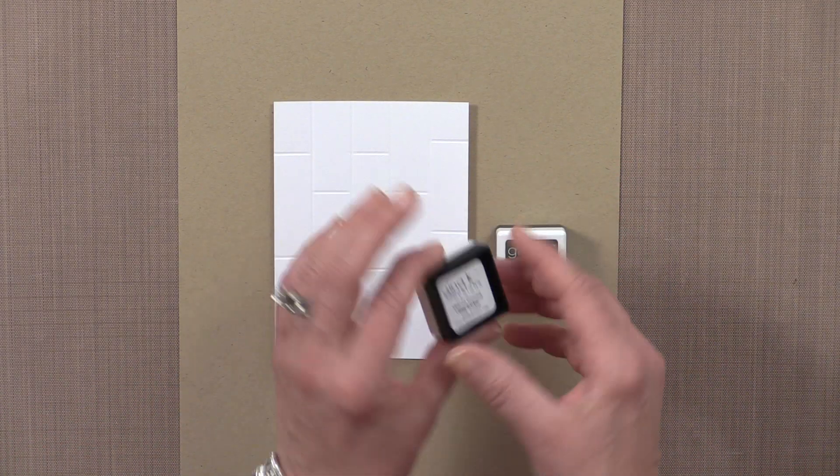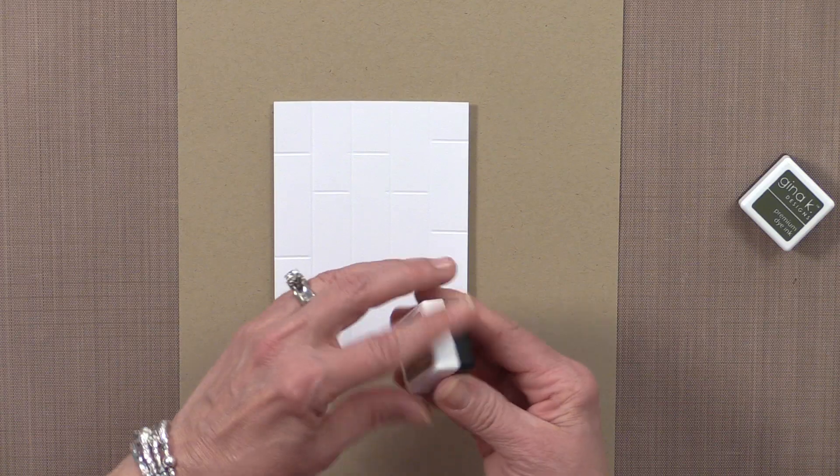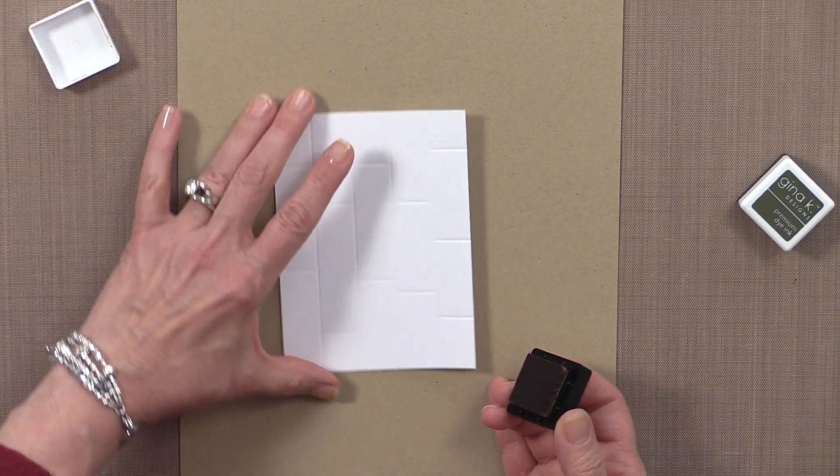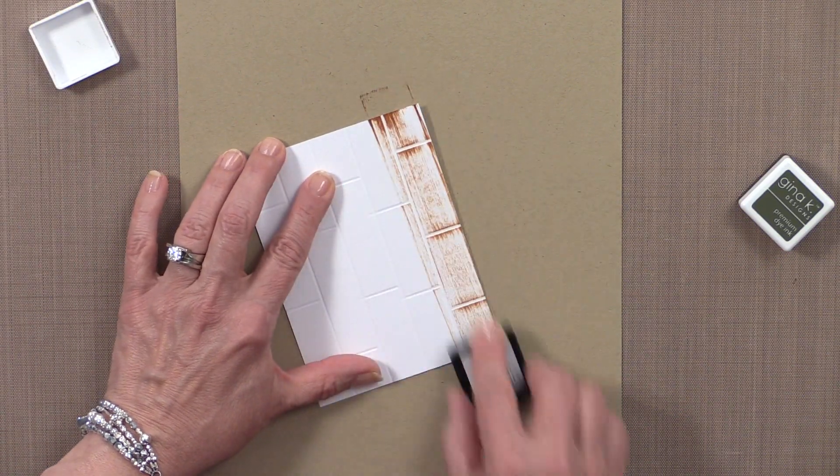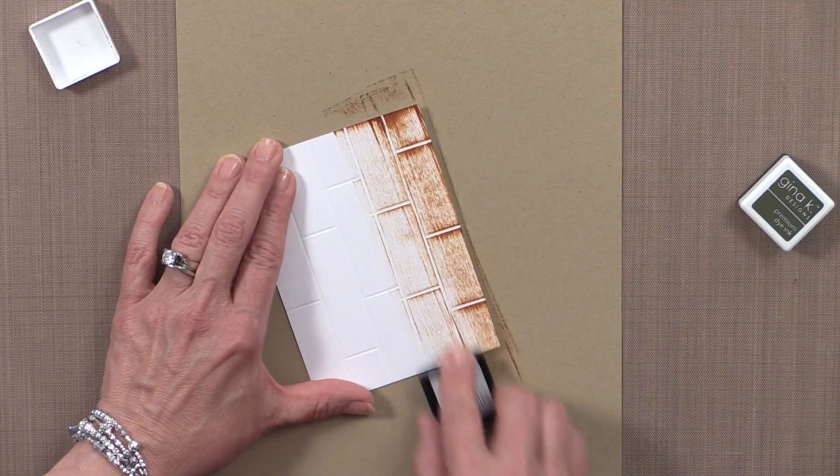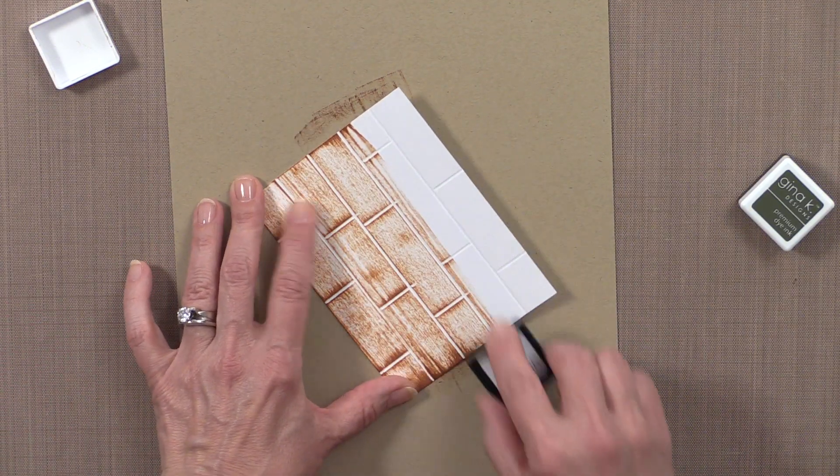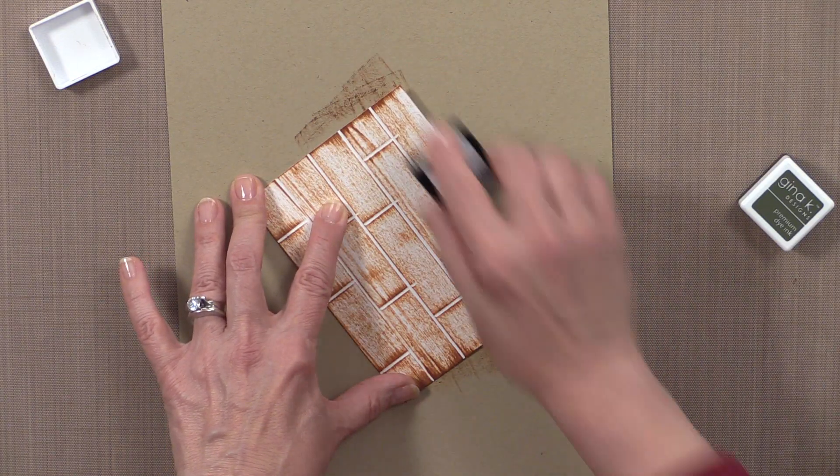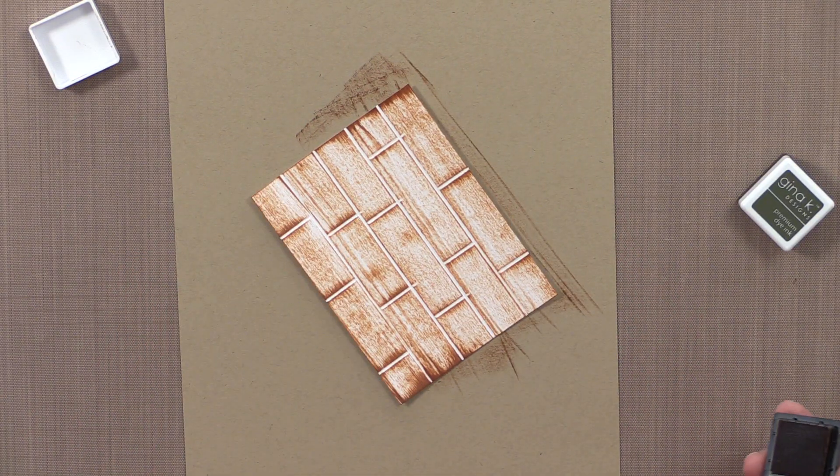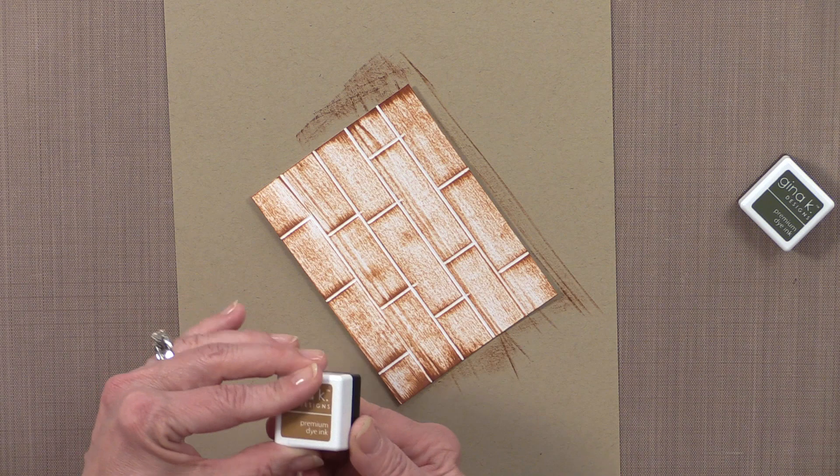So now I'm going to do the wood graining. I'm going to start with my warm cocoa ink cube and just streak that ink cube down my cardstock. That really accentuates the different lines that I've scored into my cardstock. You can see I'm not worried about getting it solid color. I want a lot of white left behind.